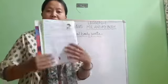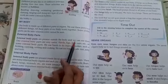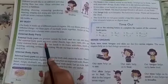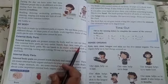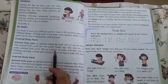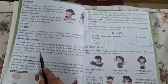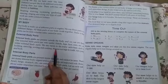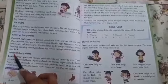Open the textbook at page number 10. External body parts are present outside the body and we can see them. Our external body parts are very useful — hands, legs, face, and ears are some external body parts. We use hands to do many activities such as holding, carrying, writing, and cooking. We use our legs to walk, run, jump, and kick.